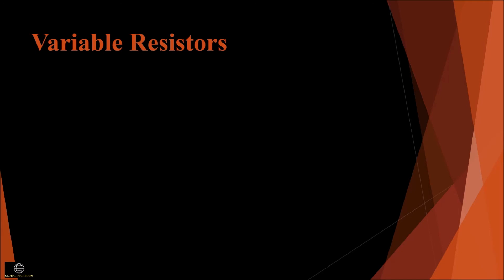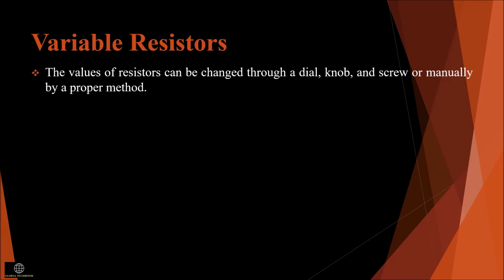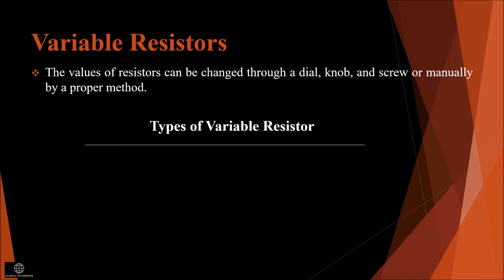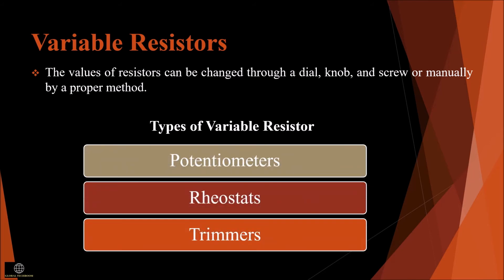Variable resistors — as the name says, the value of the resistor can be changed through a dial, knob, screw, or manually by proper methods. There is a sliding arm connected to the shaft, and the value of resistance can be changed by rotating the arm. They are used in radio receivers for volume control. Types of variable resistors are potentiometer, rheostat, and trimmers.